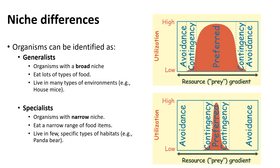Organisms can be identified as generalists, which means that they have a broad niche and they have a lot of options — not depending on one type of food, but having many sources. They are capable of living in many types of environments. An example here is the house mouse. This species is very successful because it can live anywhere, in the field or inside houses.